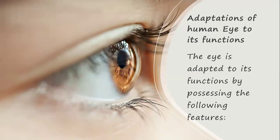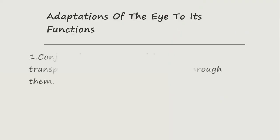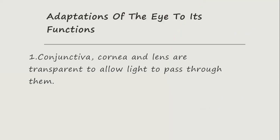The eye is adapted to its functions by possessing the following features. The first one is the conjunctiva. The cornea and the lens are transparent to allow light to pass through them. These parts are adapted to be very transparent just to allow light to pass through them, so as to enable vision.